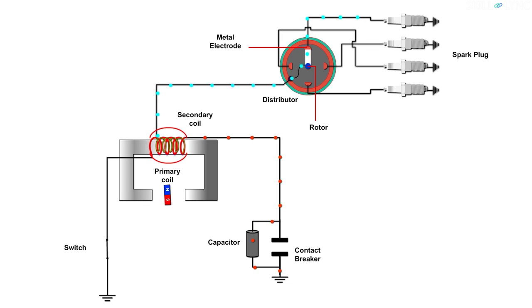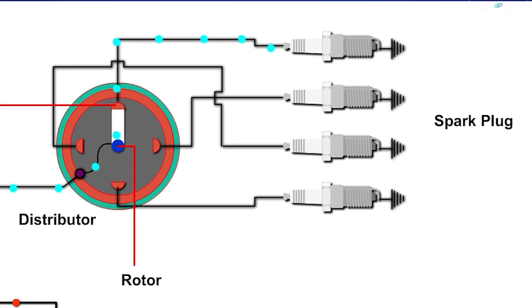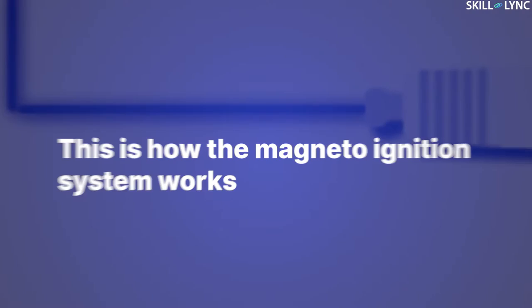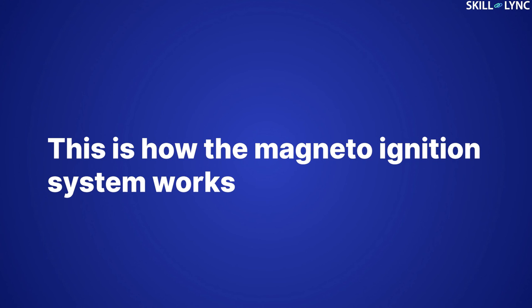The current is carried to the central electrode of the spark plug through the metallic electrode. Due to the high potential difference between the electrodes of the spark plug, the gap between them will get ionized. This results in the formation of a spark. Well, this is how the magneto ignition system works.